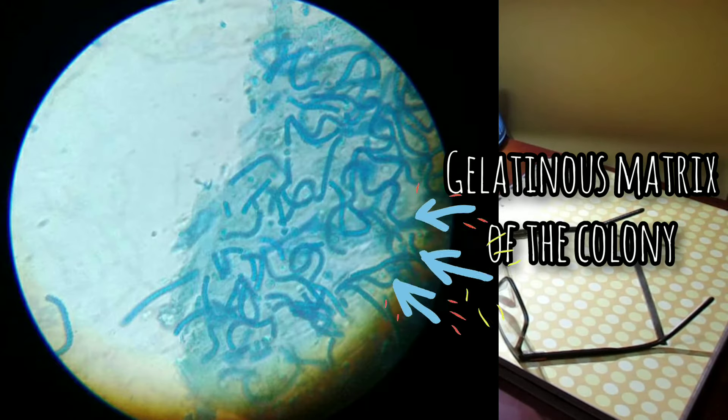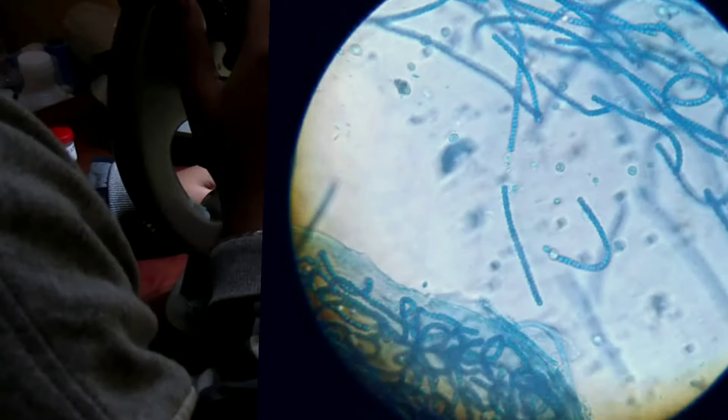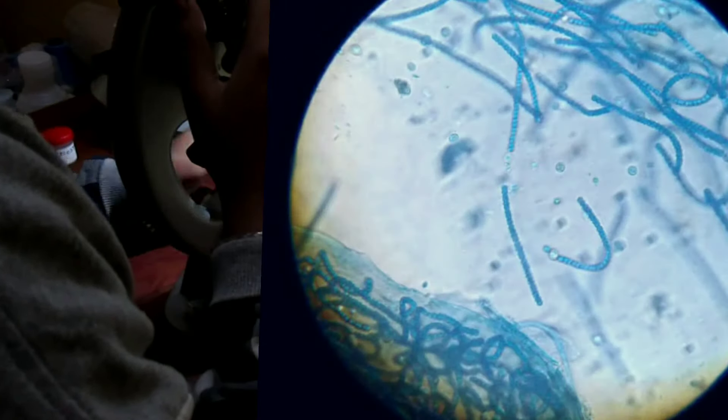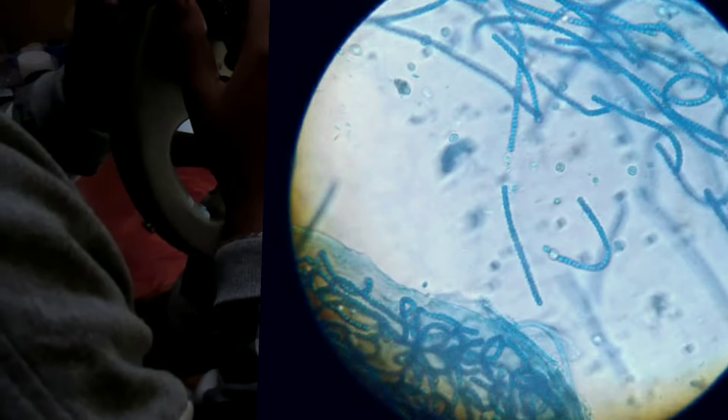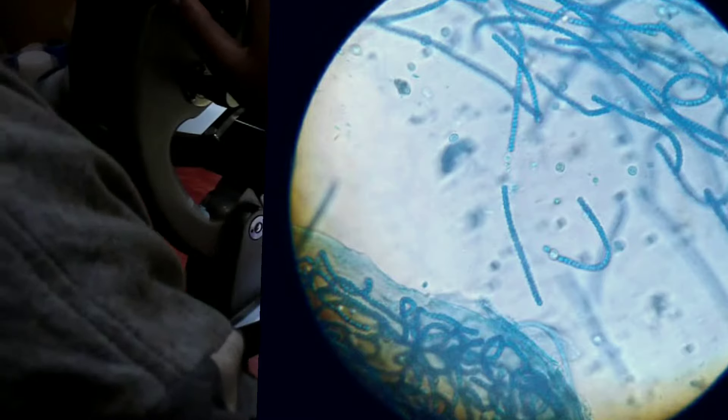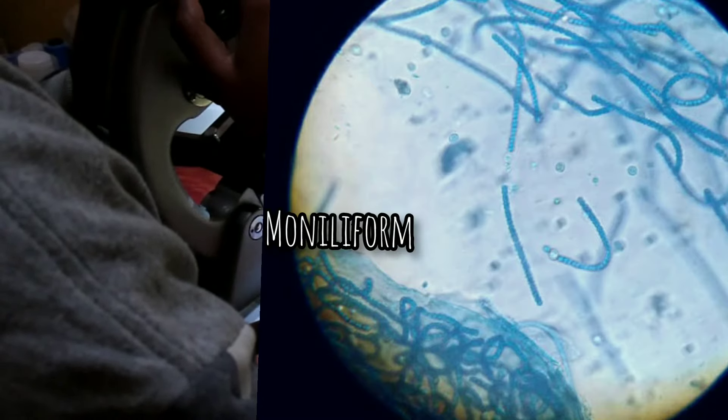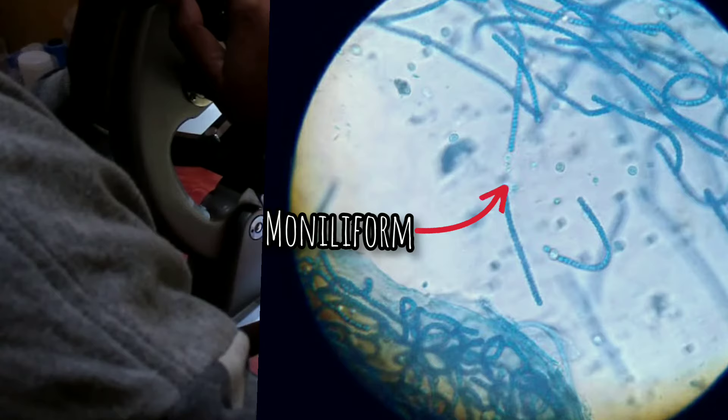The sheaths of adjoining trichomes may fuse to form a common gelatinous matrix of the colony. The filaments are unbranched; they're usually contorted and twisted in various ways. Each filament consists of a row of rounded oval cells which seem to be arranged like beads on a string. Such a habit is called moniliform.